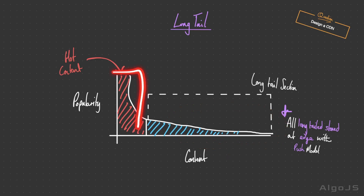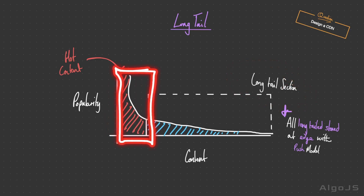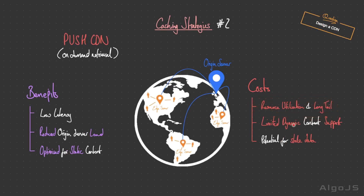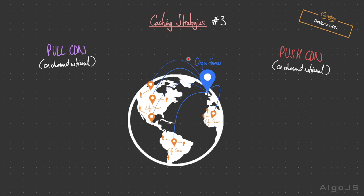Pushing all content to edge servers, regardless of popularity, may result in inefficient resource utilization — consuming bandwidth, storage space, and server resources for content that might never be accessed. Additionally, there is limited dynamic content support; since push CDNs are optimized for static content, dynamic content changes may not be instantly updated to users as they need to be pushed in advance, potentially leading to stale data.